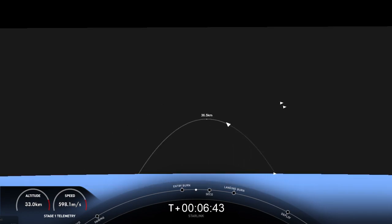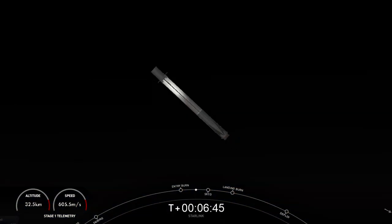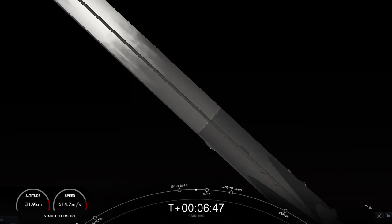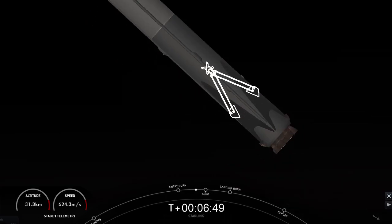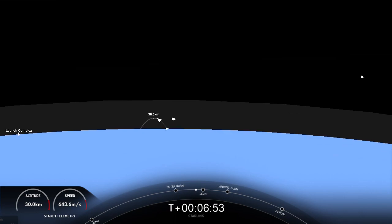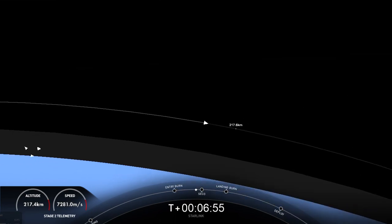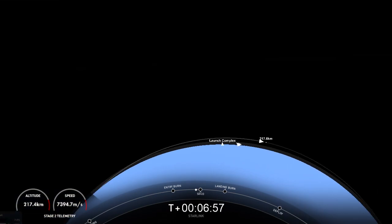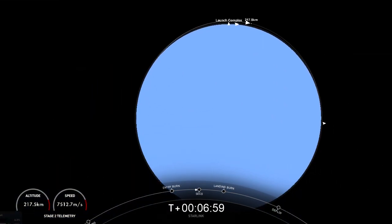Stage 1 entry burn shutdown. We had a successful shutdown. Stage 1 will now coast through the atmosphere until landing burn out of the Atlantic Ocean and land on our drone ship. Stage 2, FTS has safed. Just read the instructions.